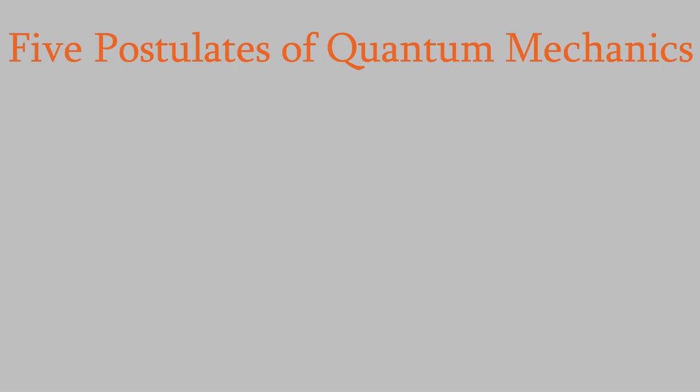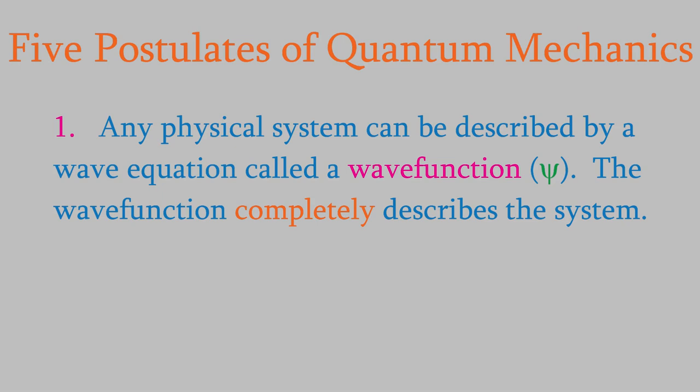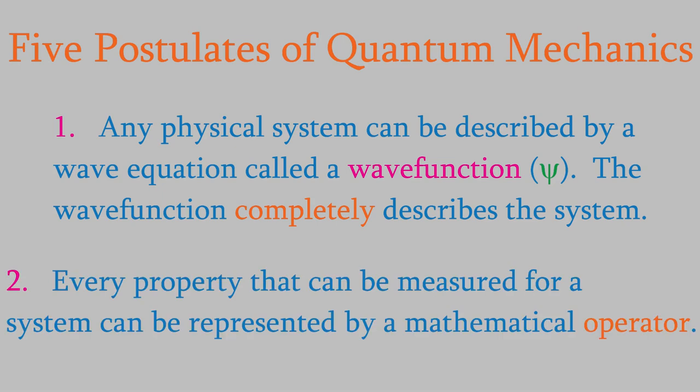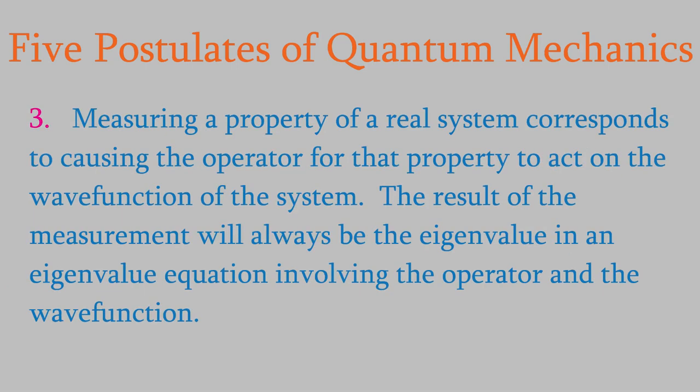We've already talked about three of those postulates. The first one states that all matter can be described using wave equations called wave functions, and the wave function of a system provides a complete description of the system. The second postulate tells us that every measurable property of a system can be represented by a mathematical operator. And the third postulate says that when we perform a measurement on a system, we're causing the operator to act on the wave function, and the wave function and numerical result are the eigenfunction and eigenvalue of an eigenvalue equation.